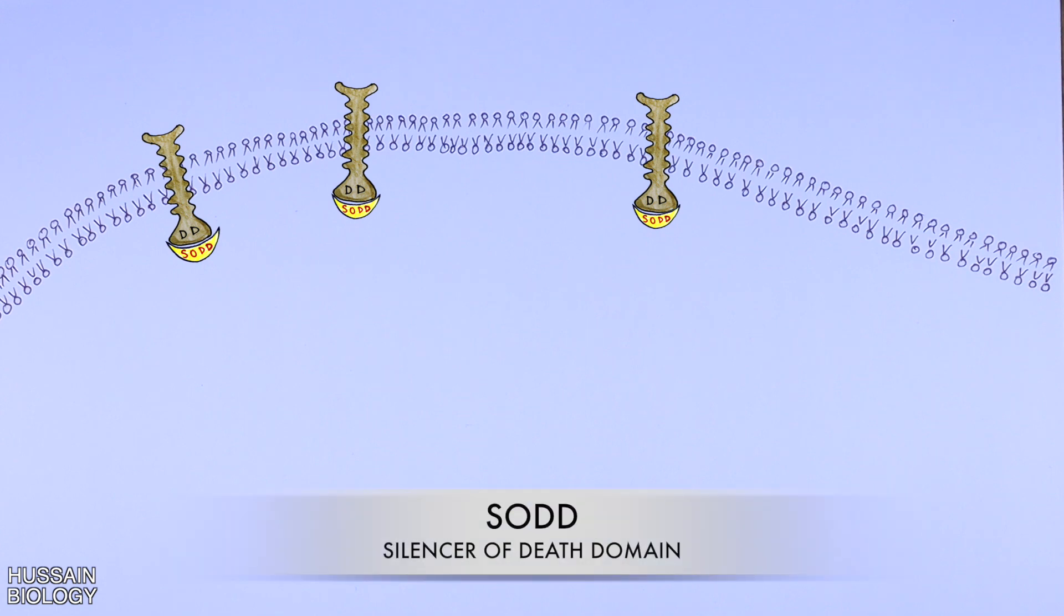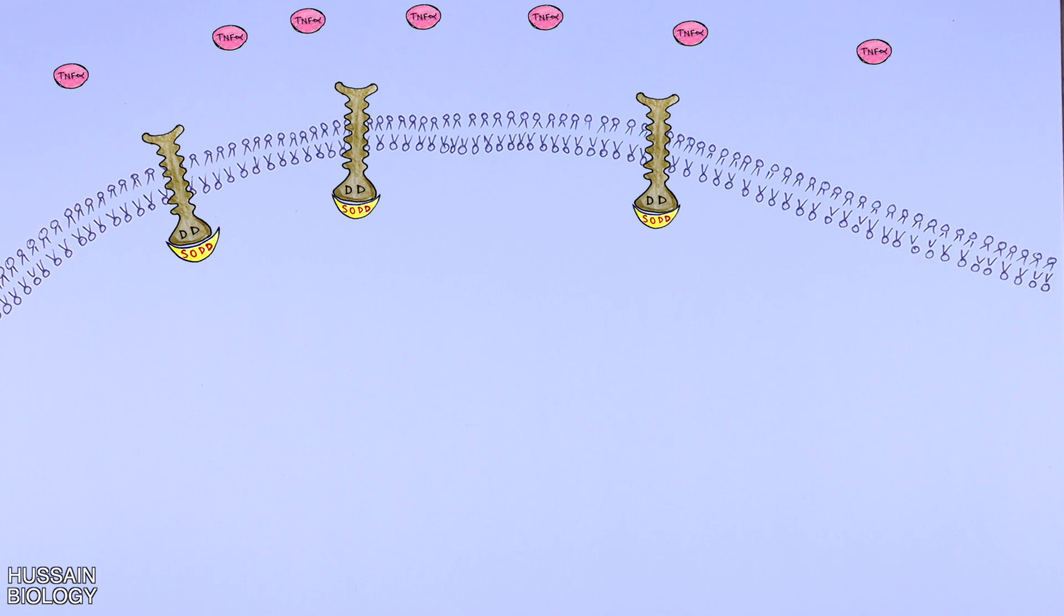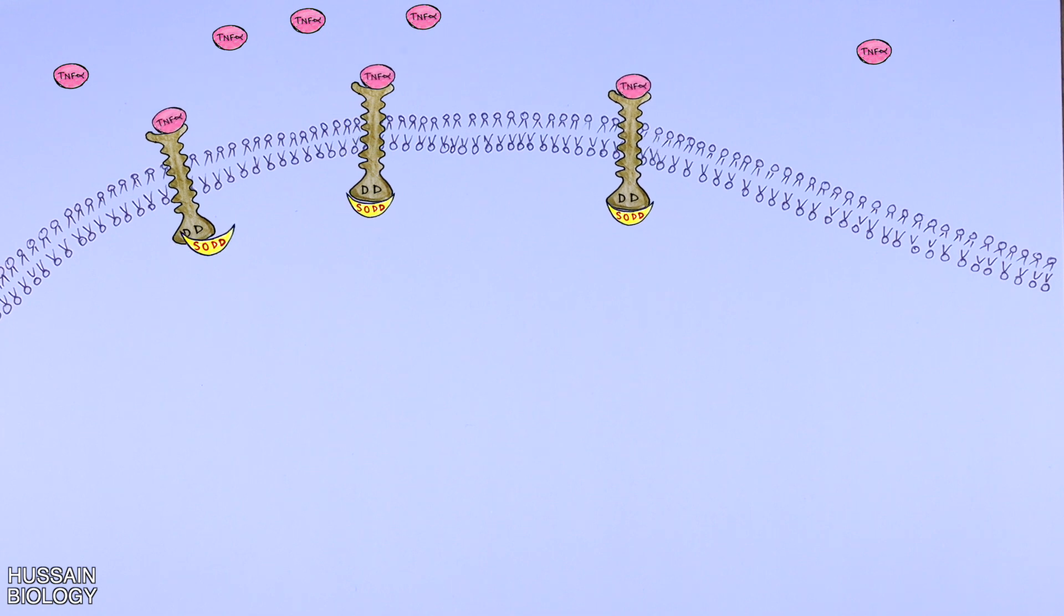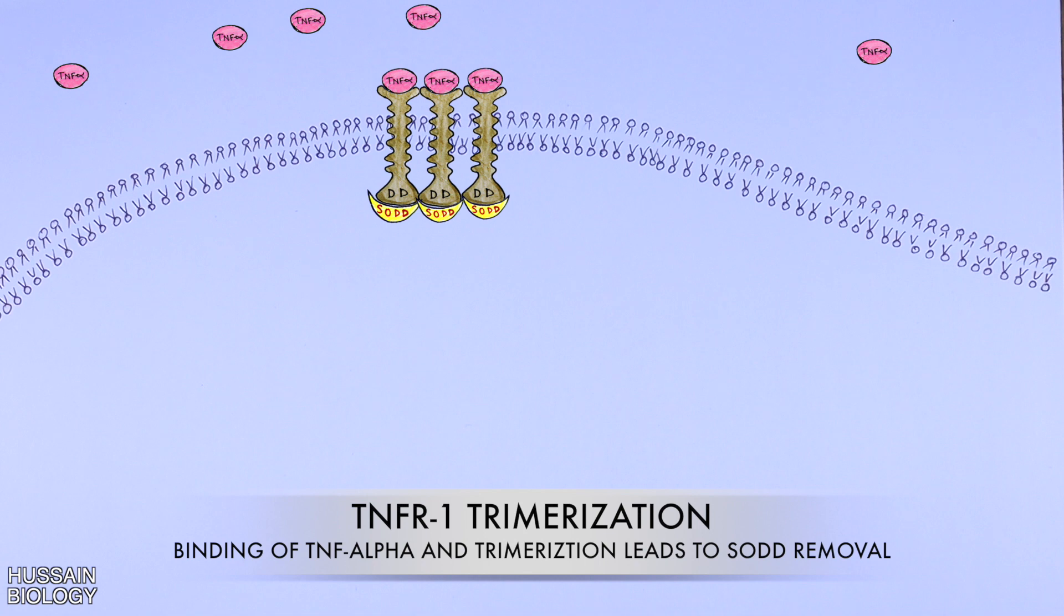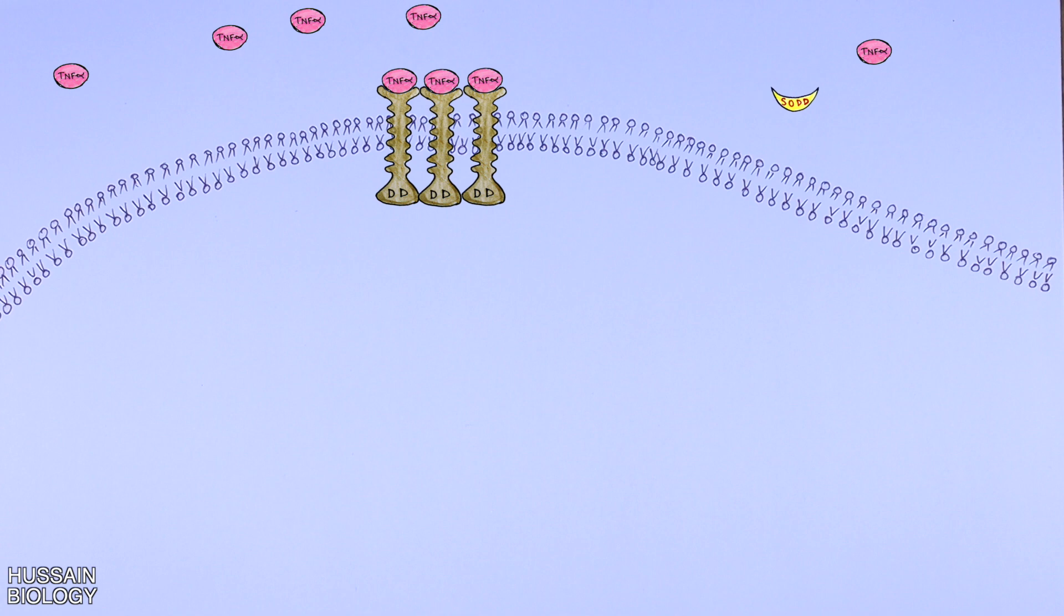Now let's initiate the signaling. First, the TNF alpha molecules, which are the signaling molecules in this pathway, are present outside the cell as shown in the diagram. Here in this animation, TNF alpha molecules come in and bind the TNF receptors on the plasma membrane. The binding of TNF alpha induces trimerization of TNF receptor. Once trimerization is completed, SODD leaves the death domain and downstream signaling starts.